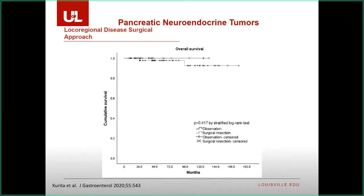They do very well. Observation versus surgical resection in patients with less than two centimeter neuroendocrine tumors shows no difference in overall survival. For our patient at 2.2 centimeters, he reaches the cutoff — we should probably resect him. If he were 1.5 centimeters, I would watch him without any concern.